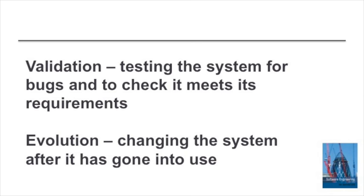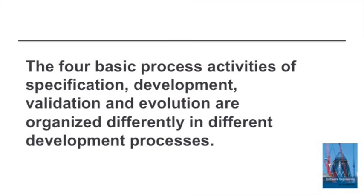Software evolution happens after the software has been deployed, where it's changed in response to changing user requirements or to fix bugs that weren't discovered before the software was delivered to the customer. These four fundamental activities are part of all software processes, be they plan-based or agile processes, but they're organised differently in different processes.